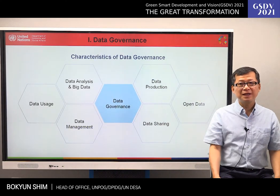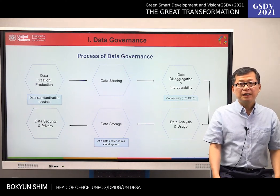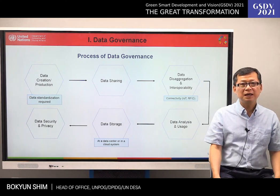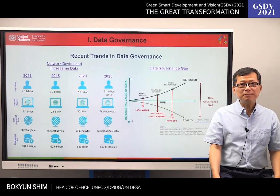Data governance starts from data production, and it comprises data management, opening, sharing, analysis, and usage of data. In data creation and production, data standardization for quality data is required. Standardization enables data disaggregation and interoperability. In data analysis and usage, privacy should be protected, and data security should be ensured in data storage at the data center.